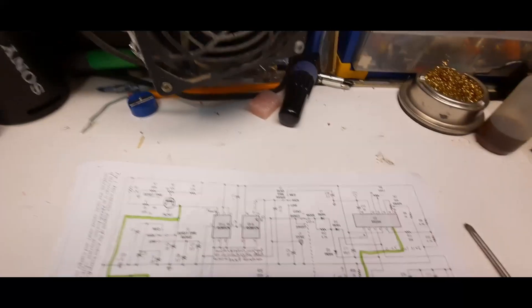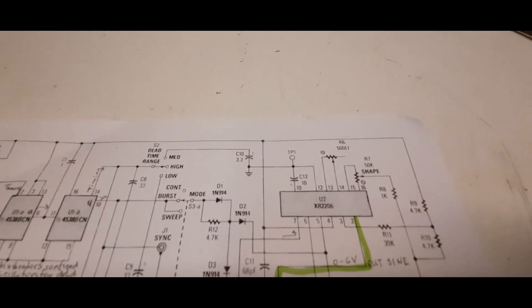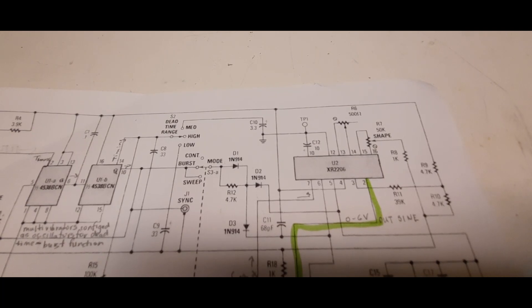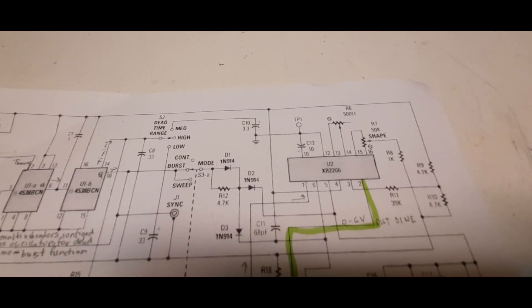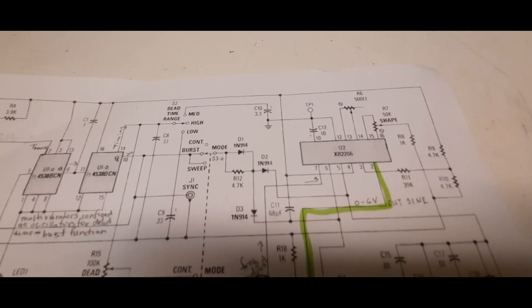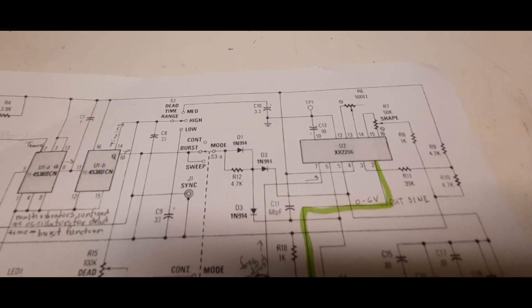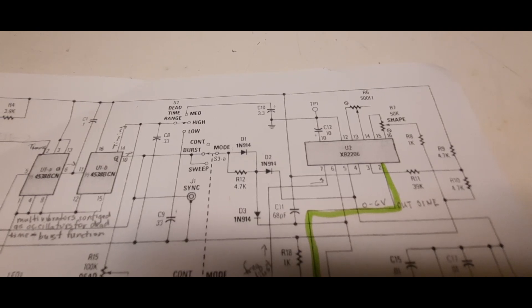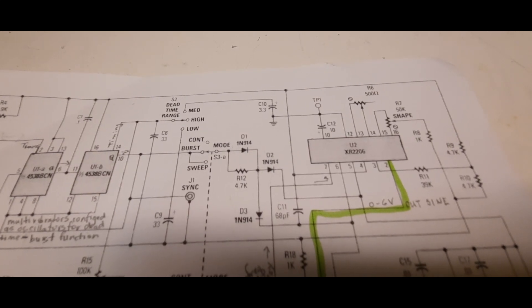The most important component I'm missing is the XR 2206. I'm sure a lot of you know what that chip is - it was built just for frequency generators, to design a simple frequency generator with sine wave, square wave, triangle wave, etc. In our case, we're just going to use the sine wave output.